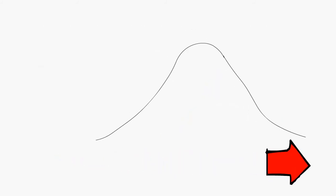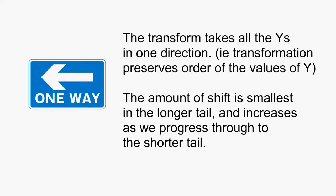It's easy to have a transform that acts on all values. Putting this together we can say: The transformation takes all Ys in one direction, i.e. it preserves order. The amount of shift is smallest in the longer tail and increases as we progress through to the shorter tail.